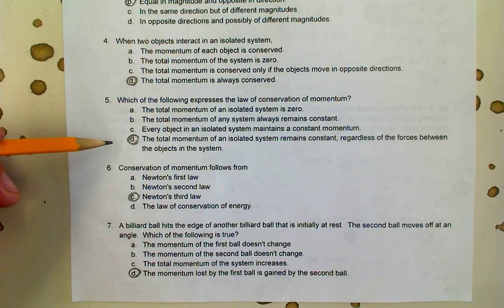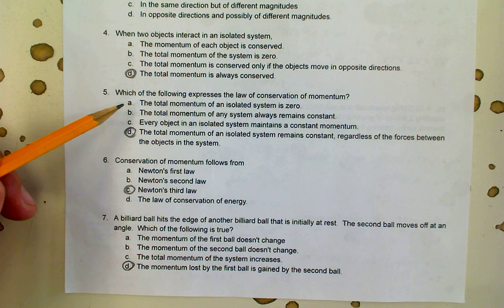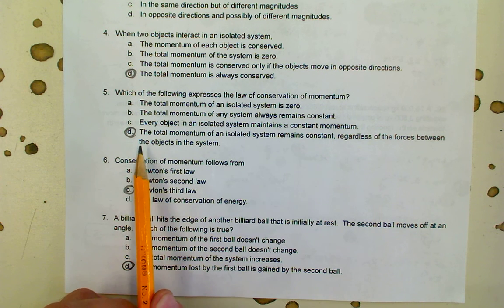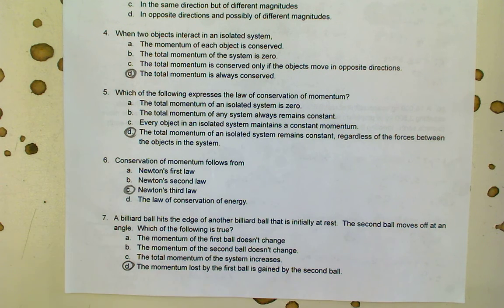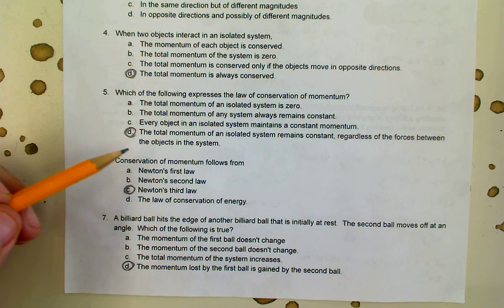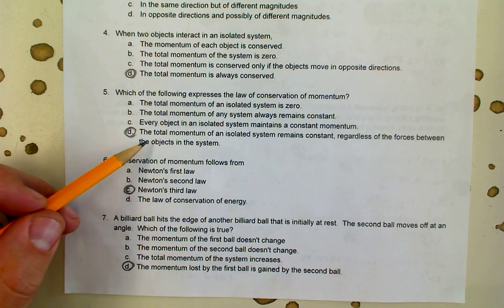This is really the same question but it's saying which of the following expresses that law of conservation of momentum. D is the correct answer: the total momentum of an isolated system remains constant regardless of the forces between the objects in the system. It's okay if objects bump into each other or if they're attracted to each other by gravity or an electrostatic force or something, because that's all happening within the system.